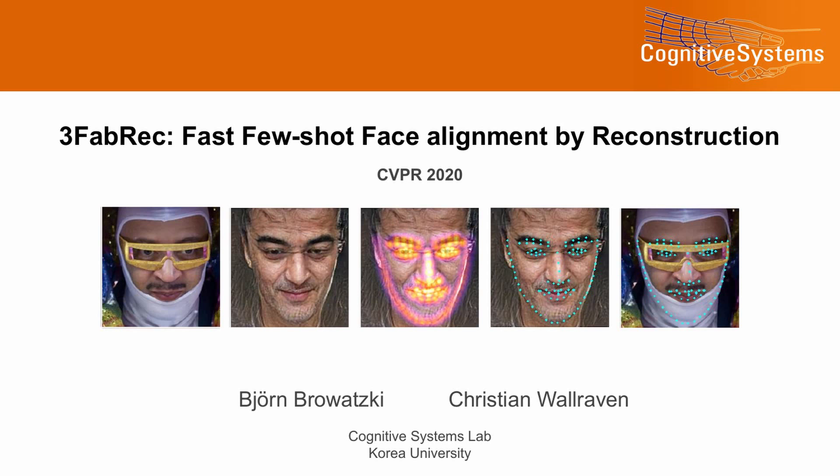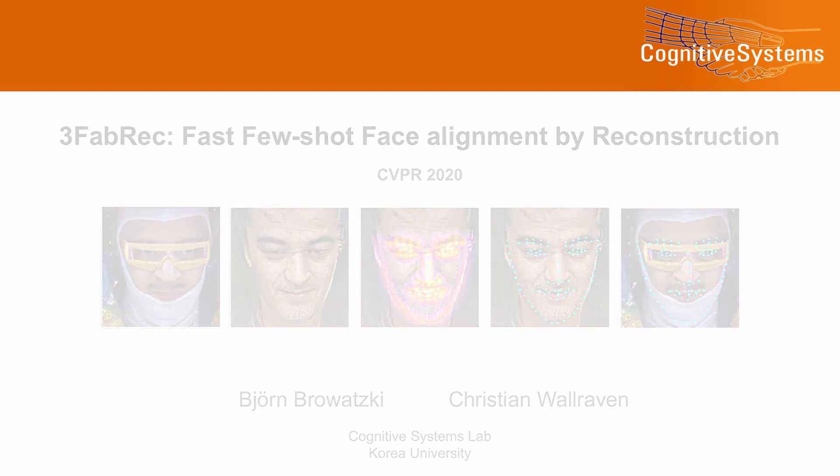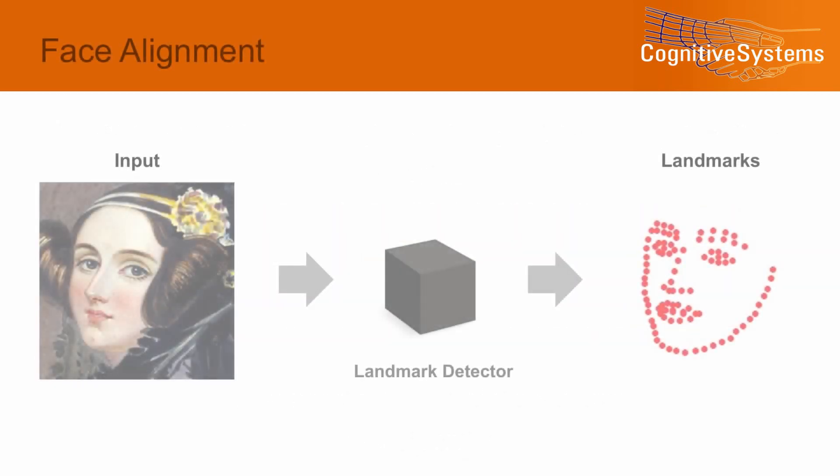We present a fast, semi-supervised method for face alignment that predicts facial landmarks by deconstructing an RGB image and reconstructing it jointly with additional channels for landmark heatmaps.